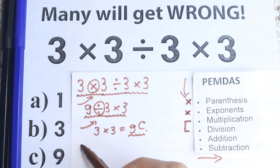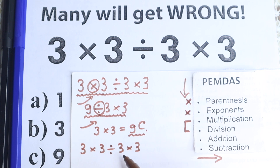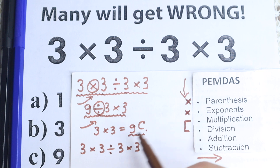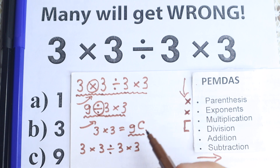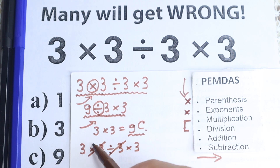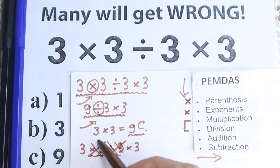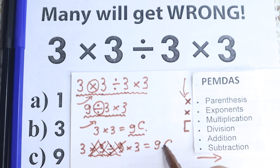But we also have a faster method. We have 3 times 3, divided by 3, and times 3. Just imagine: you multiply by 3 and then divide by 3 — you've done nothing. It's like taking one apple from a table and putting it back — you take three apples and give back three apples. So we can cancel that division-by-3 and times-3 pair, and 3 times 3 equals 9. This is option C.